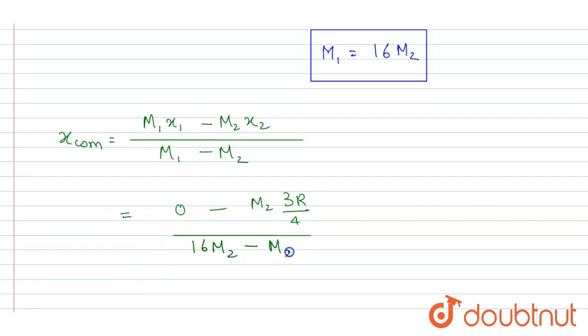So if you see, this m2 will get cancelled out. It will be 3R by 4 with a negative sign into 15. So this will get cancelled out by 5 and you will get minus R by 20 as the x coordinate.